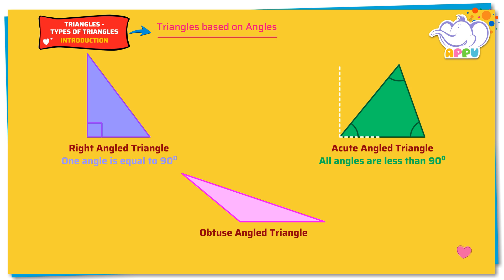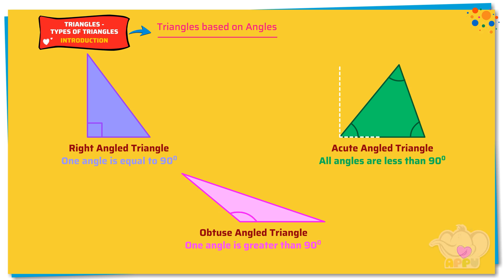Obtuse angled triangle. An obtuse angled triangle is a triangle that has one angle greater than 90 degrees. Imagine two perpendicular dotted lines at the angle. An angle is more than 90 degrees if it is beyond the two dotted lines.